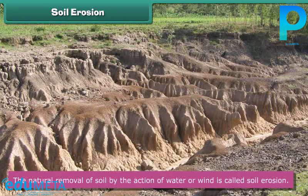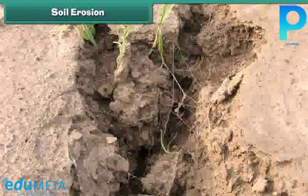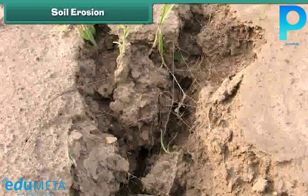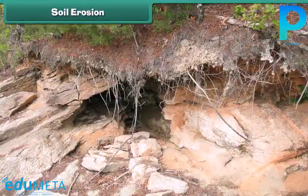Look at the images — the disappearance of the topmost surface and large ditches in the ground are the signs of soil erosion.